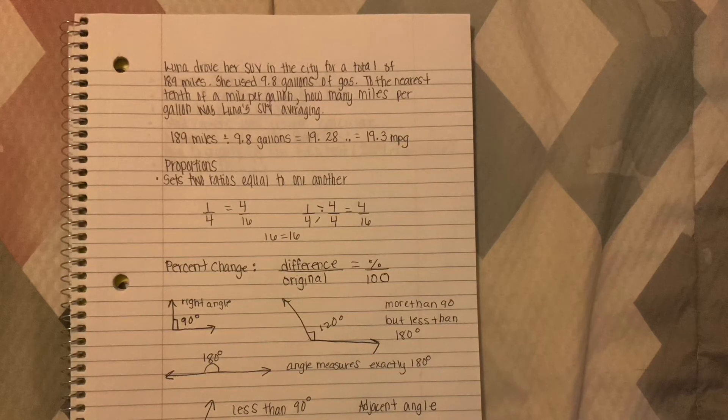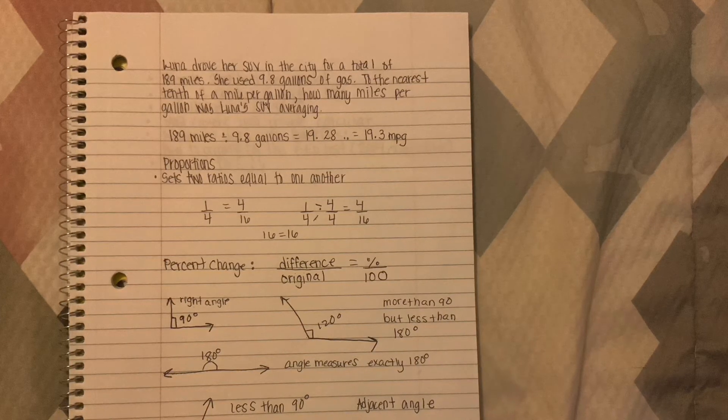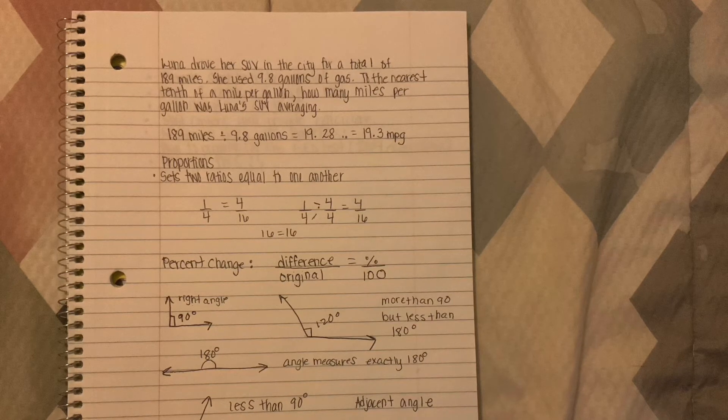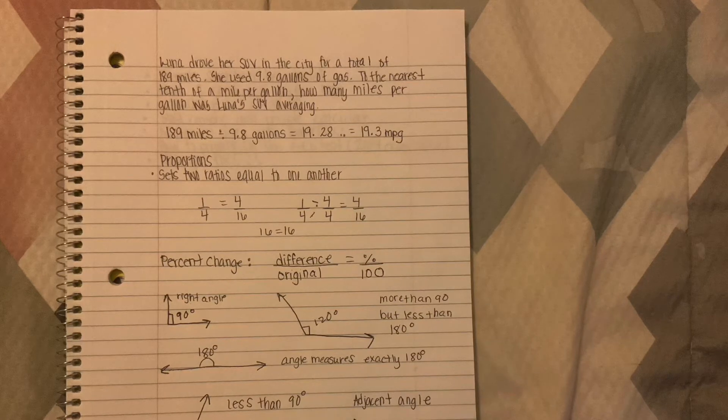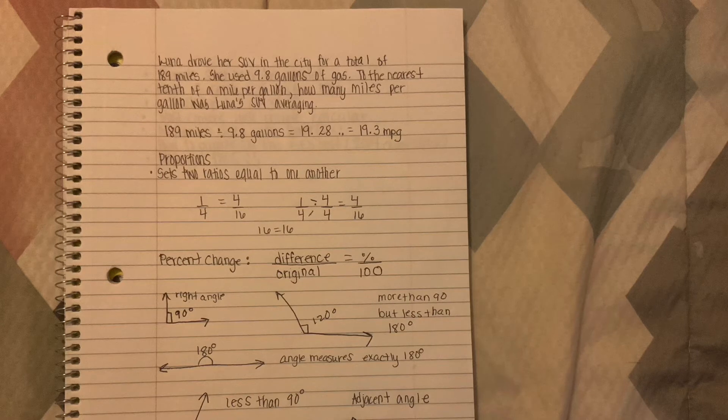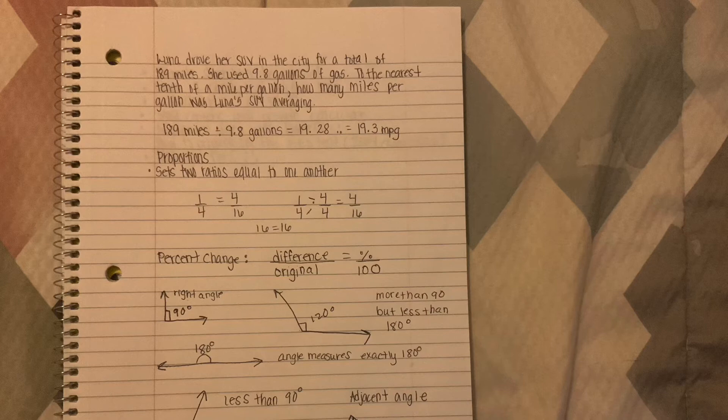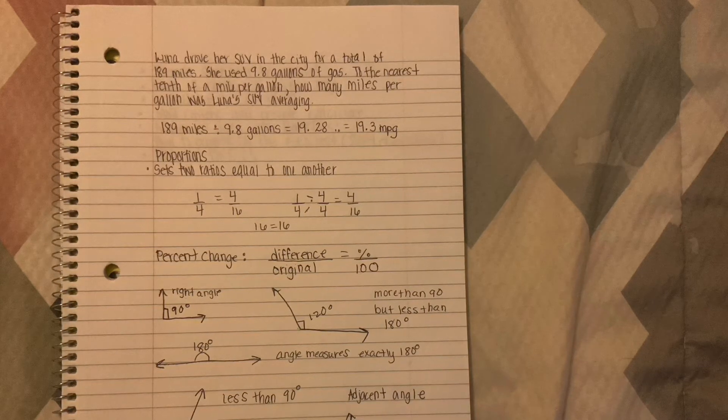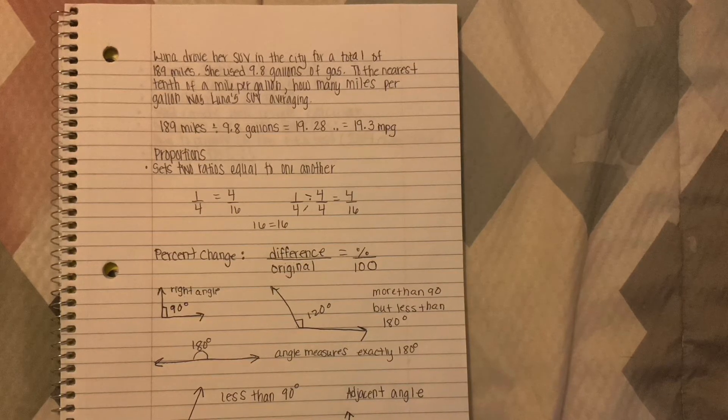Moving on to proportion. All proportions are is two ratios equal to one another, for example 1/4 equals 4/16. Cross multiply: the 1 times 4 is going to give you 4, and the 4 times 4 is going to give you 16. So 4/16 they are equal to each other, and 16 equals 16.